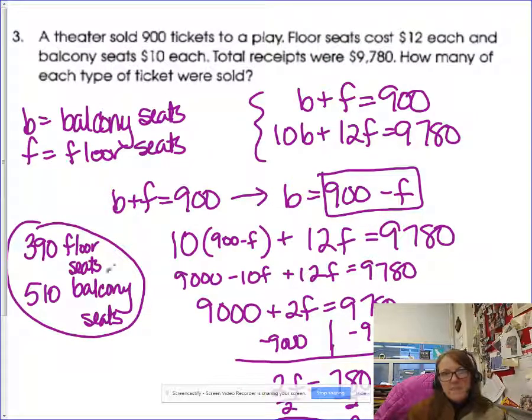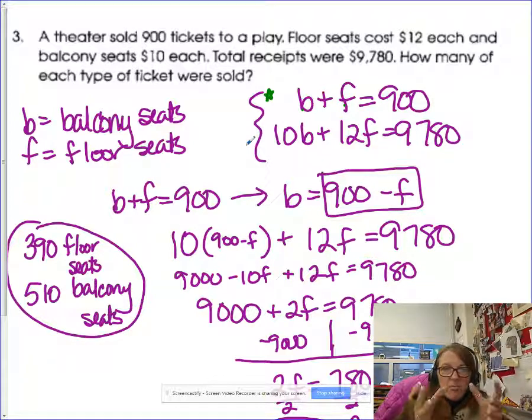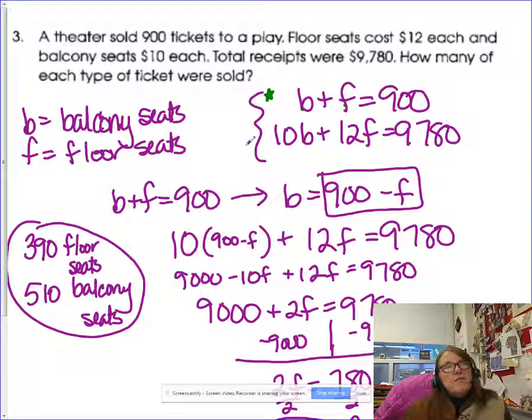Number three, you're starting with a certain number of chairs in the auditorium. So you have balcony seats and floor seats. And when you add them up, you get 900. So there's your first equation right there. The second one talks about the money. So I take $10 times every balcony seat, and imagine that gives you a pile of money for just those balcony seats. 12 bucks for every floor seat. Multiply 12 times F. That gives you another pile of money. And the total pile of money from all these ticket sales is $9,780.